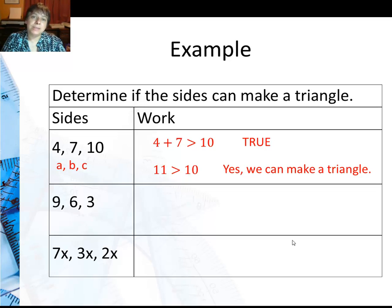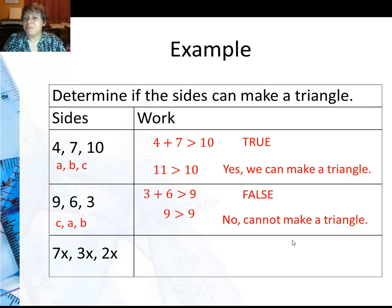Now for the next example, 9, 6, and 3. 9 is actually the longest side. So I'm going to do 6 plus 3, or 3 plus 6, must be greater than 9. Is 9 greater than 9? That's actually false. So I cannot make a triangle.